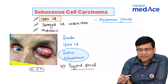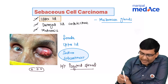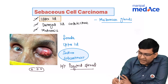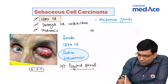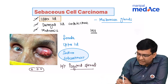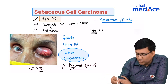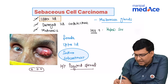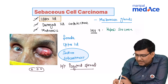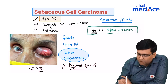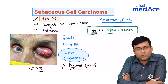One final one-liner: if they ask which specific type of lid tumor is seen in HIV-positive individuals, the answer is Kaposi sarcoma - not sebaceous cell carcinoma. A lid tumor specific for HIV-positive individuals is Kaposi sarcoma.